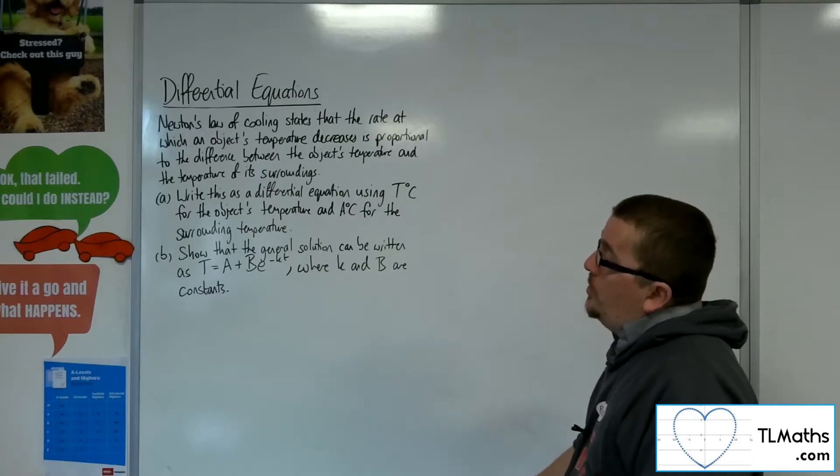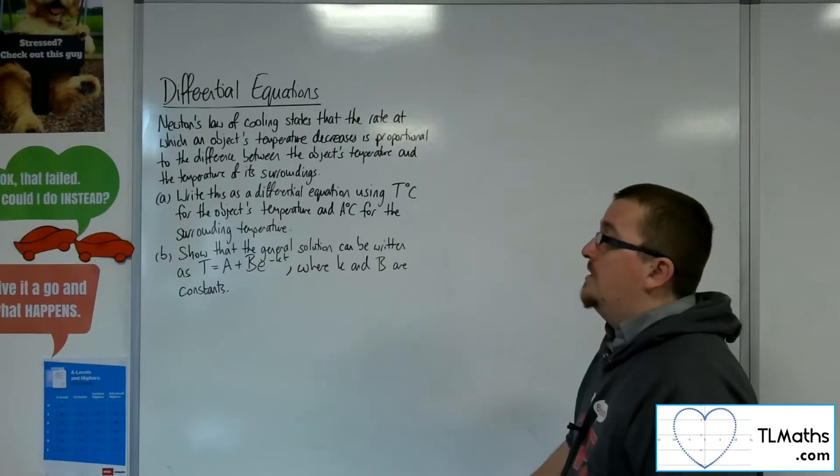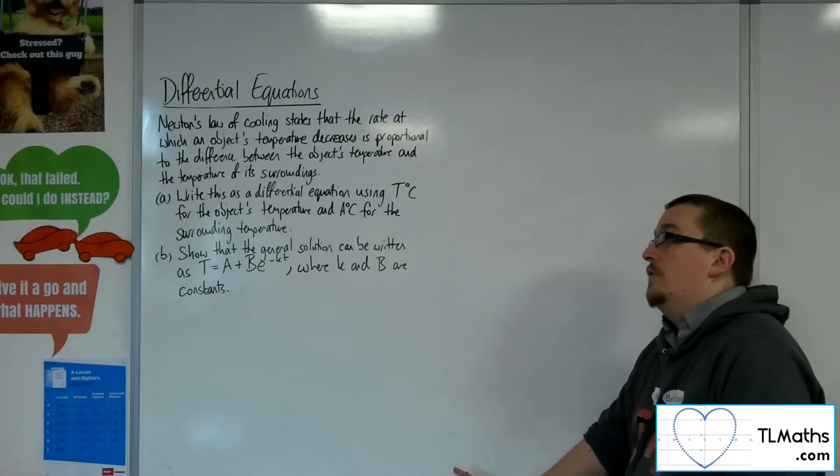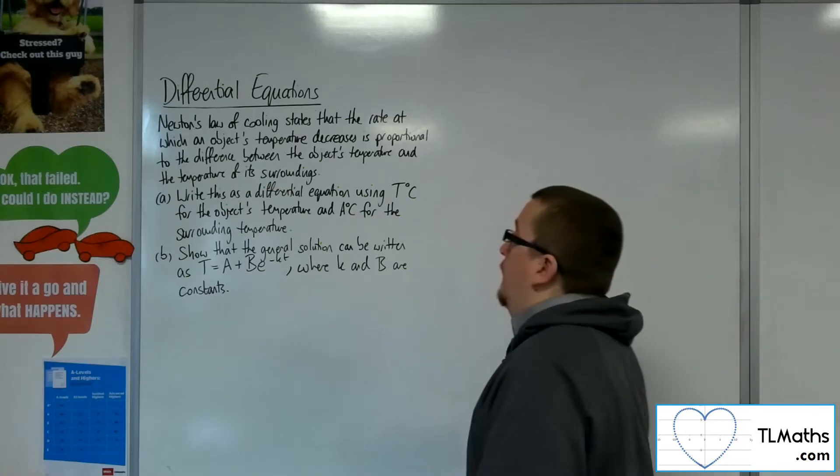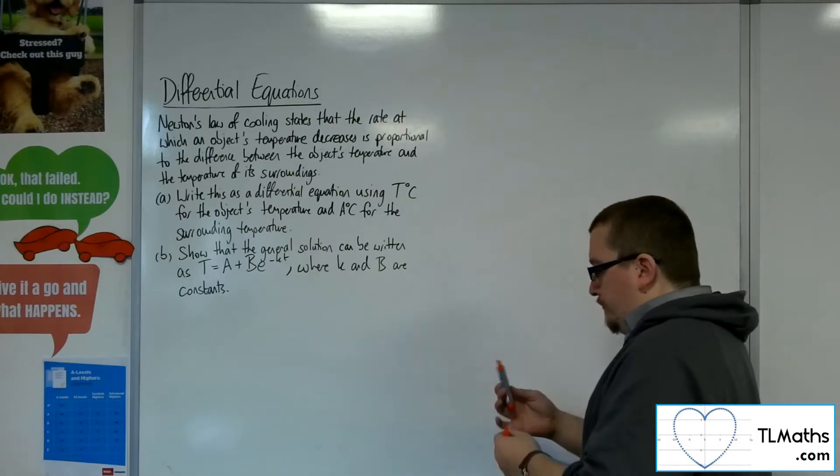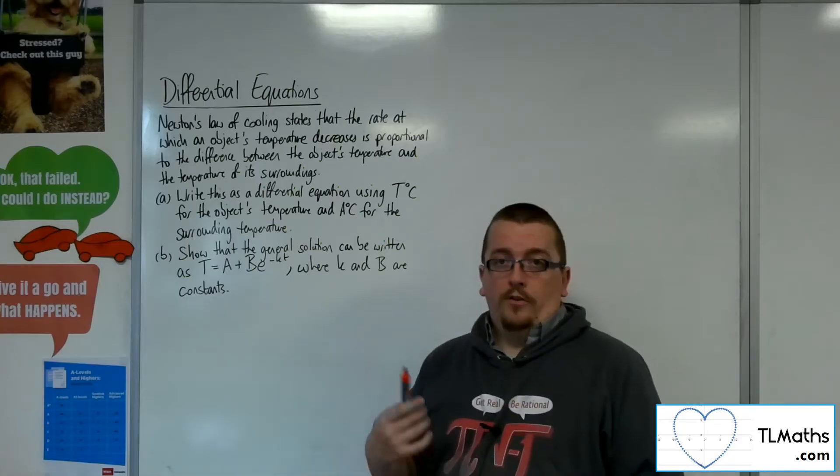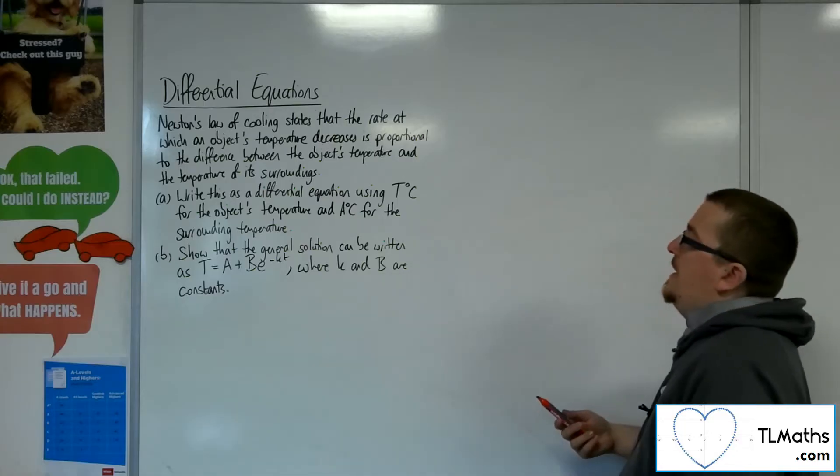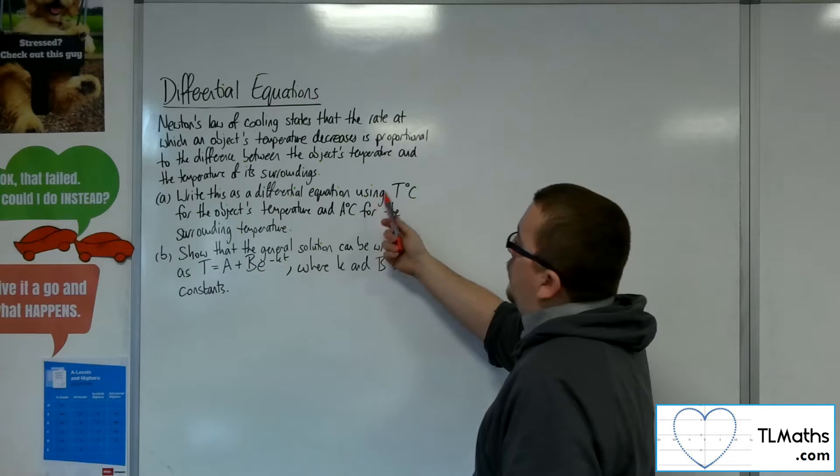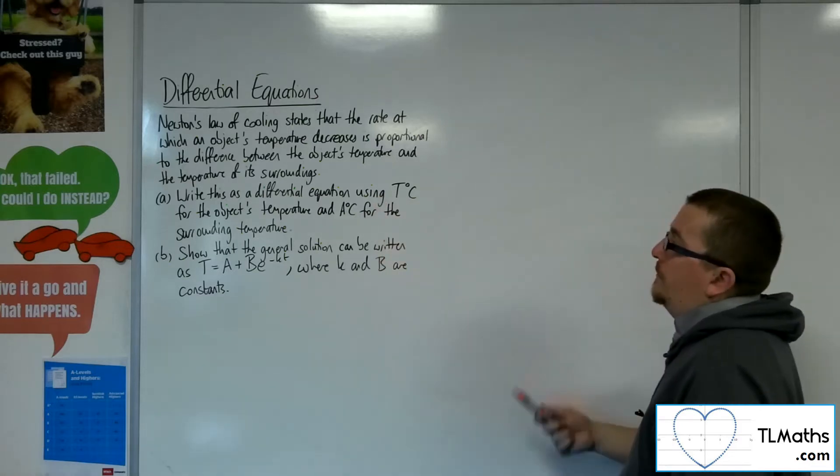Write this as a differential equation using T degrees centigrade for the object's temperature and A degrees centigrade for the surrounding temperature. Okay, so we'd be taking the surrounding temperature to be constant, and it's the temperature of the object T that is the variable.